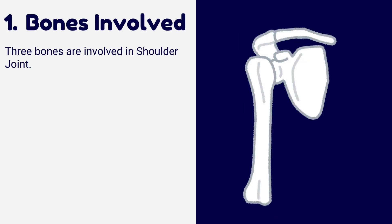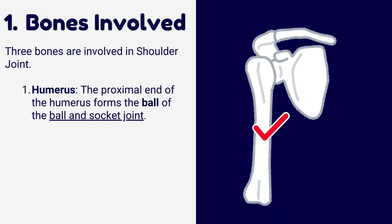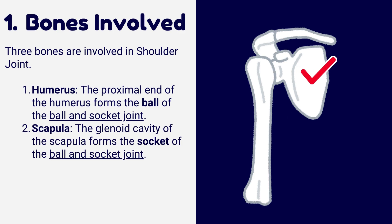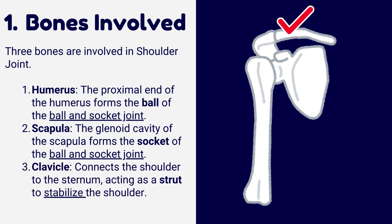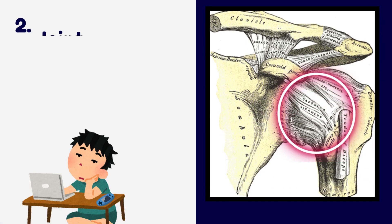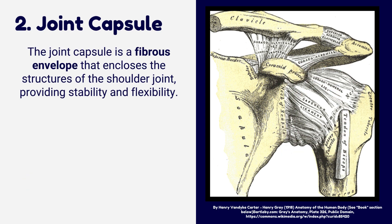Three bones are involved in the shoulder joint. The humerus: the proximal end of the humerus forms the ball of the ball and socket joint. The scapula: the glenoid cavity of the scapula forms the socket of the ball and socket joint. The clavicle: connects the shoulder to the sternum, acting as a strut to stabilize the shoulder.